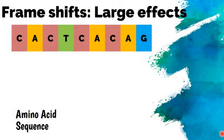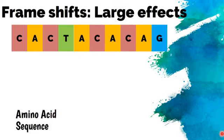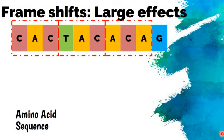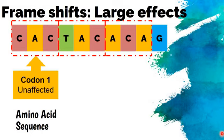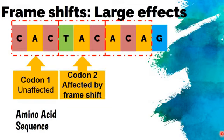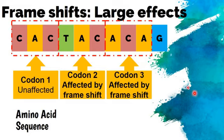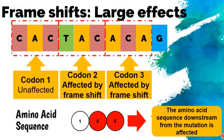But if we have a big frameshift — let's say your whole sequence gets invaded by one extra nucleotide that's inserted — our first codon is unaffected, it's still CAC. But the second codon has been affected by the frameshift. We've added an extra nucleotide in there, so we don't have the same codon anymore. Following that, the third codon is also affected because everything has been shifted to the right by one position. So other than that first amino acid which is encoded, the second and the third are going to be affected. The amino acid sequence downstream from the mutation is affected.